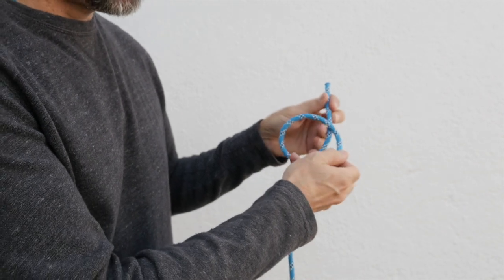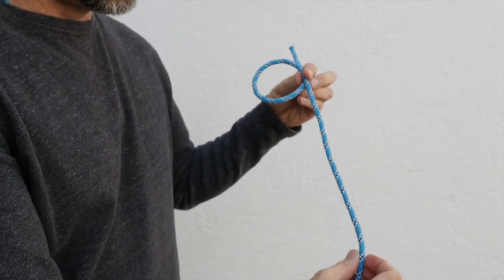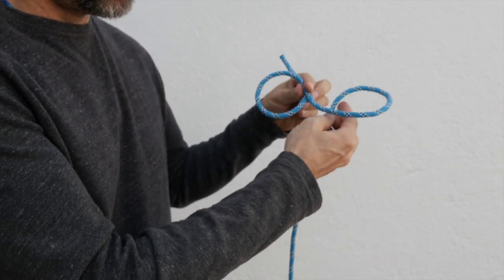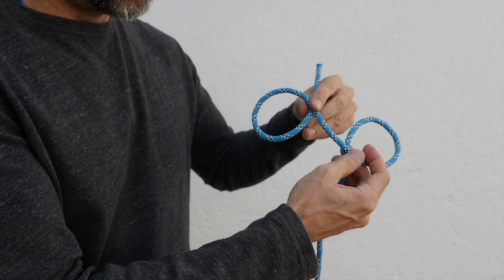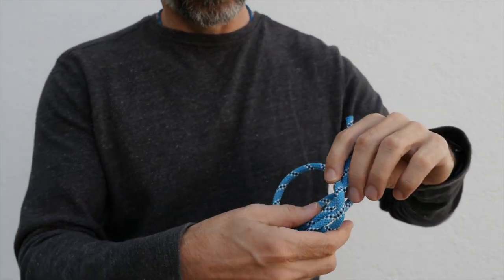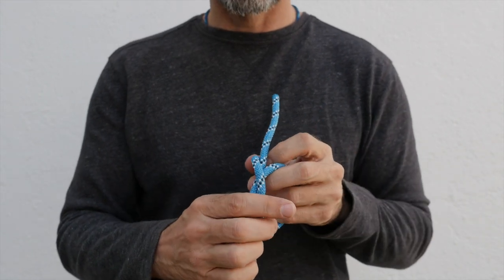First I make one loop. Then I make the second loop. And then I fold them together. And again, I have my clove hitch.